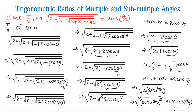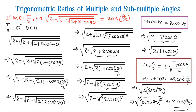So this is the value on the RHS. Therefore we have proved that √(2 + √(2 + √(2 + 2cos4θ))) = 2cos(θ/2). Make a note of these formulas of multiple and sub-multiple angles, as they are very useful in solving examples in further videos.